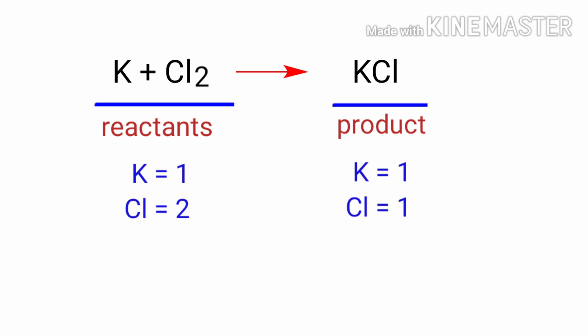In the reactants side, there are one Potassium atom and two Chlorine atoms. And the product side, there are one Potassium atom and one Chlorine atom. The number of atoms are not balanced on both sides.